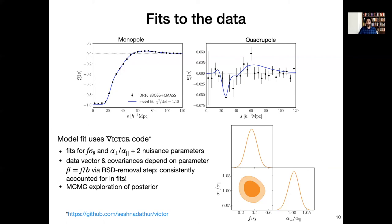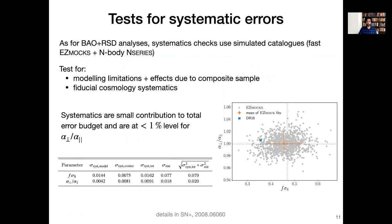Of course we want to then test the robustness of our fitting method so we test for systematic errors in much the same way as it's done for the standard BAO and RSD analysis. So we use the same suite of simulated synthetic catalogs that includes fast approximate EZ mocks as well as full N-body N-series mocks, and we're testing here limitations of the model, possible effects that arise due to the combination of the CMASS and eBOSS LRG data, and systematics that come from the choice of a fiducial cosmology model in order to analyze this data. And without going into too many of the details of this, the summary is that systematics are a small contribution to the total error budget, and in particular for the most important parameter which is alpha perpendicular over alpha parallel, systematics are at lower than the one percent level.